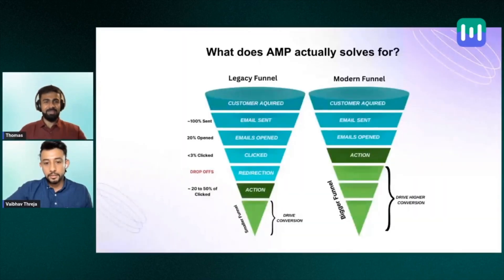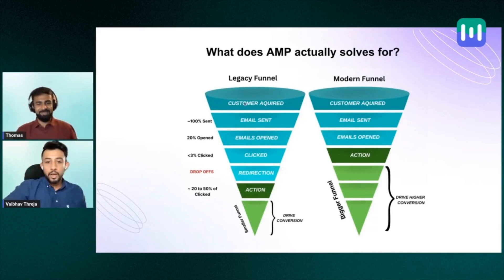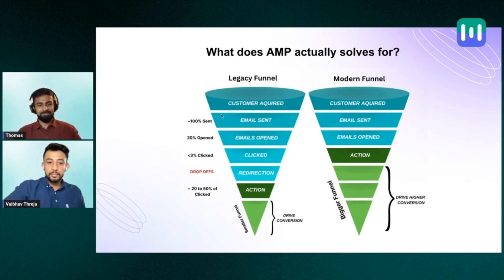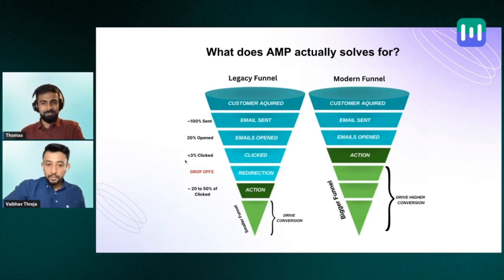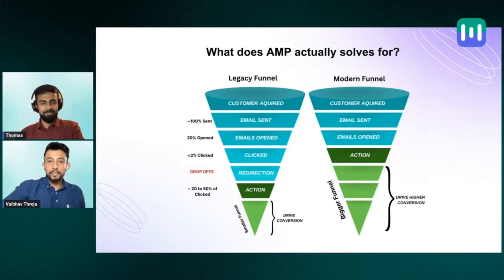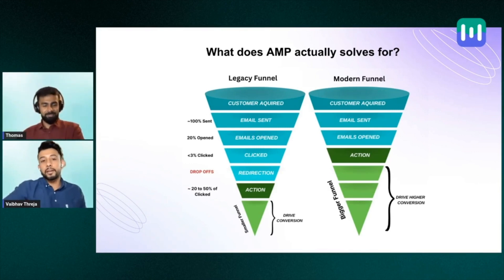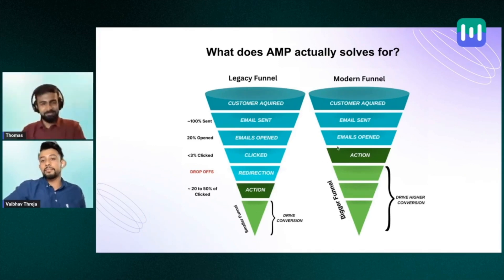So you already have a drop-off at the click stage. Now, even of those roughly 3% who clicked the CTA button — that click is not your final conversion. From that click to the final action, you have a 50 to 70 to 80% drop-off. Nobody wants to go somewhere else and perform the action you want them to do — whether that's giving a review, an NPS score, or filling out a form.